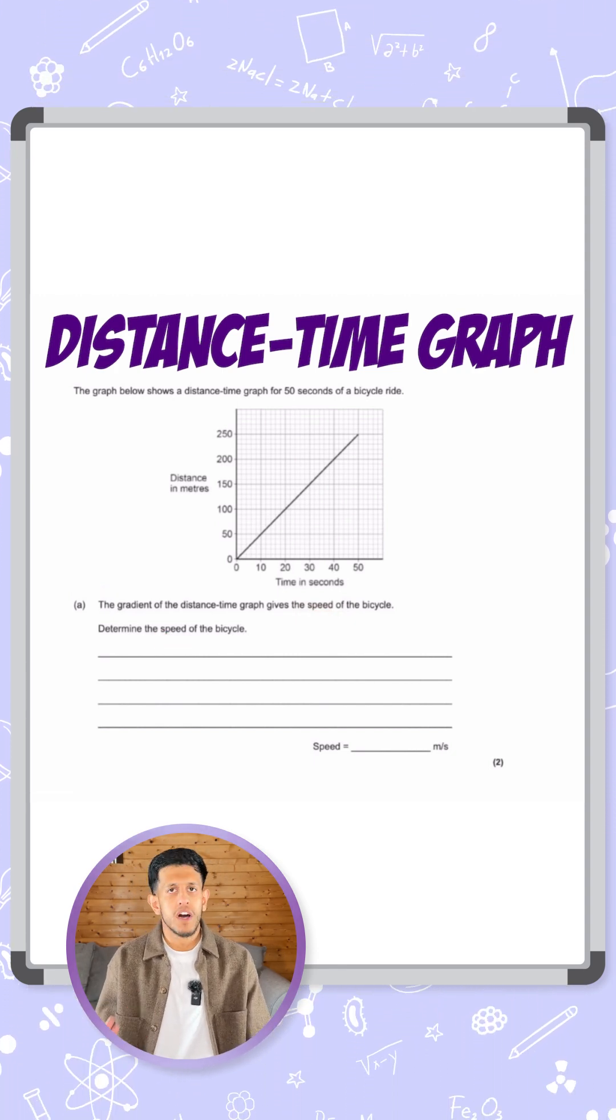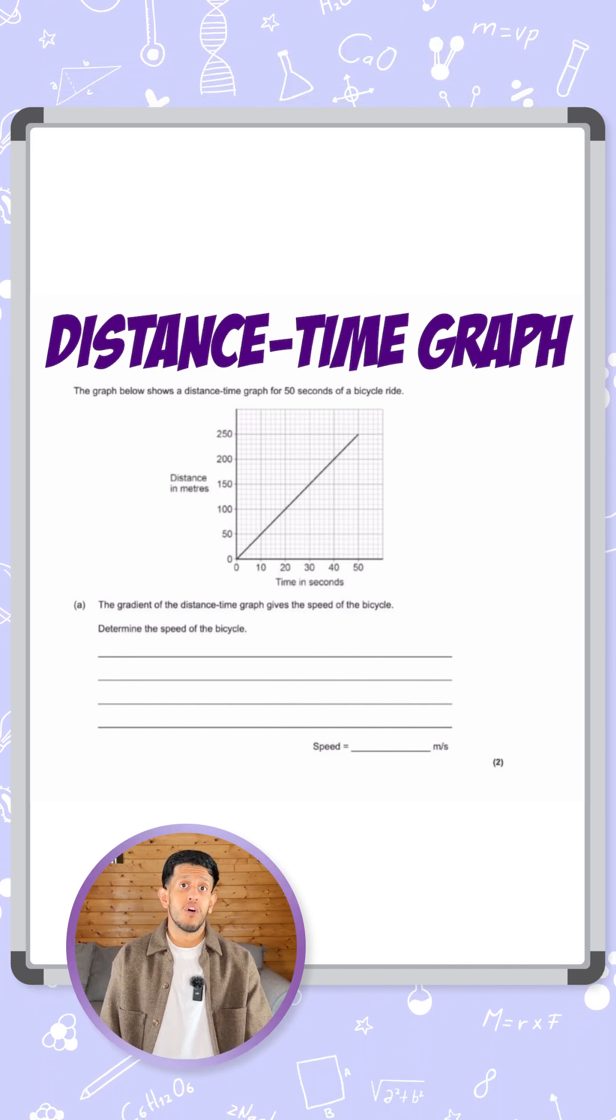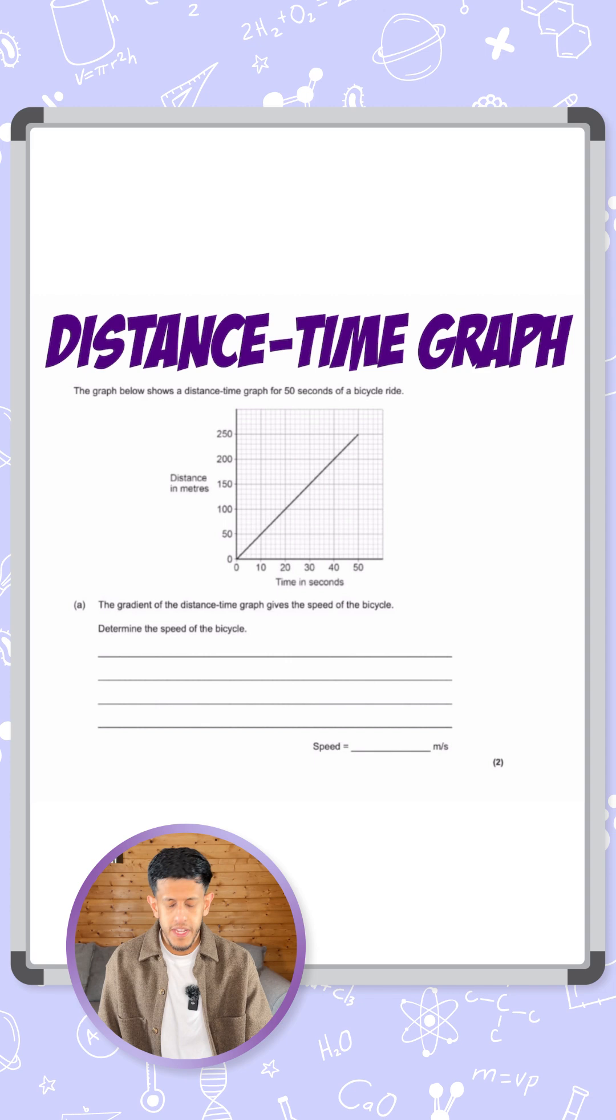As we've learned already, the gradient on a distance-time graph is the speed of the object. So here we're going to have to calculate the gradient to give us the speed in the answer.